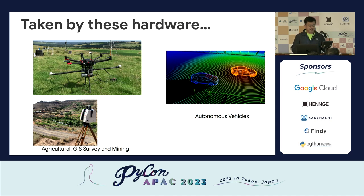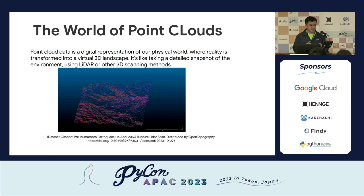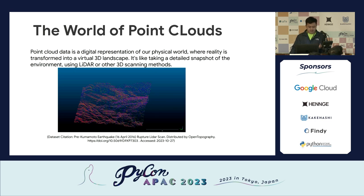The data collected by LiDAR systems is called point clouds. Point cloud data is a digital representation of our physical world — reality transformed into a virtual 3D landscape by different points altogether. It's a snapshot of an environment captured by 3D scanning tools. What you can see here is a snapshot from before the Kumamoto earthquake on April 16, 2016. There are only a few open source datasets available because it's almost like a treasure to obtain this kind of imaging.